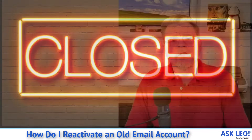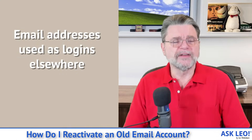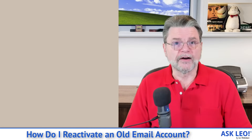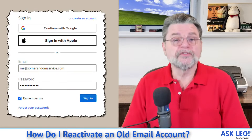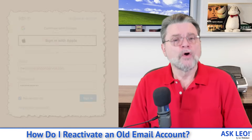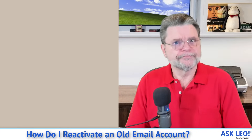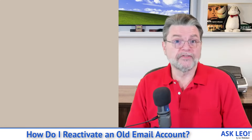Here's the thing. When other services — I'll use Dropbox as my example — use an email address as an identifier, that's all it is. It's an identifier; it's you. They can send notices to that email address, but they don't know anything about whether or not that email address is valid. When you set up the account, they send an email to that address and you click a confirmation link or enter a confirmation code. At that time, they know the email address is valid and yours and now associated with your Dropbox account.